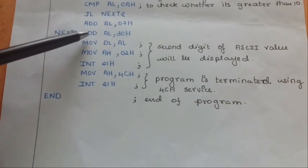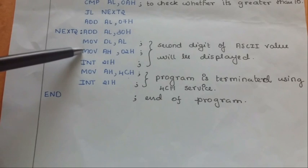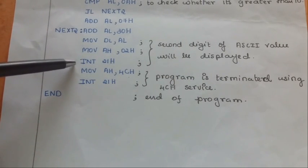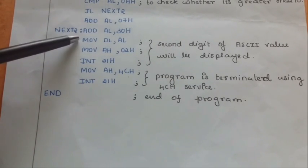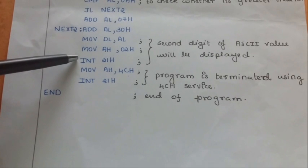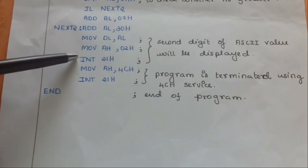After executing till here, now we will have to display the second digit onto the screen. So, we have these three instructions just like how we displayed the first number.